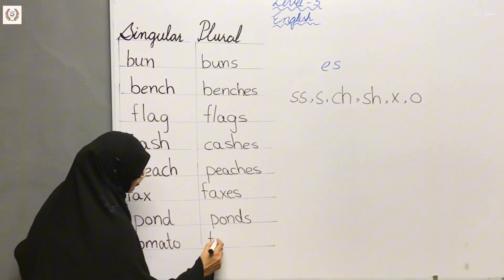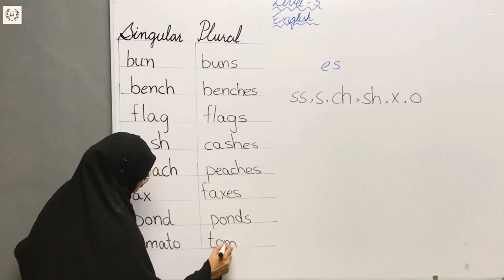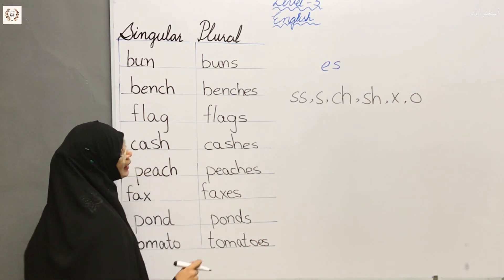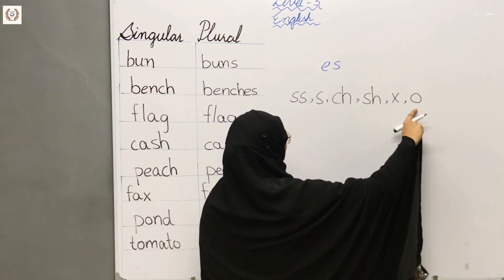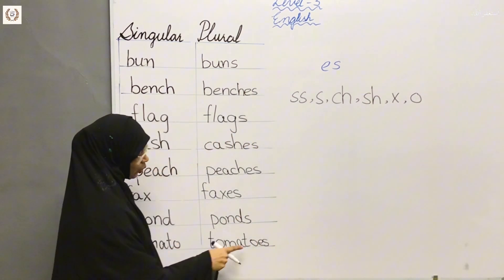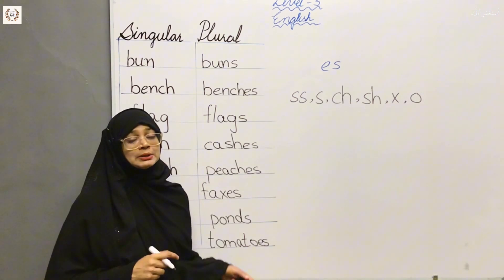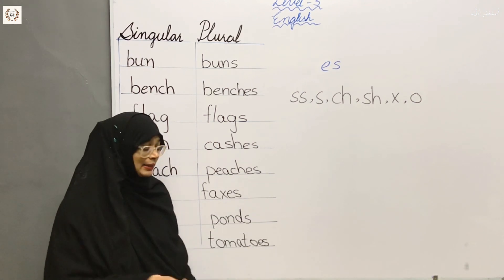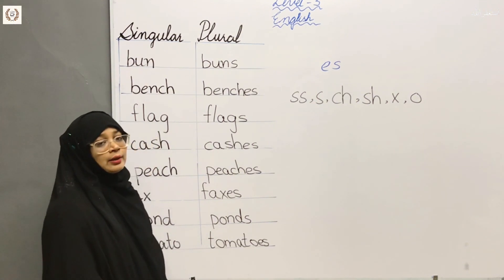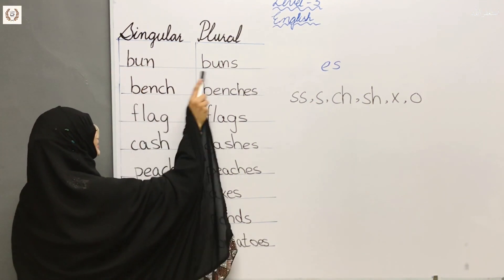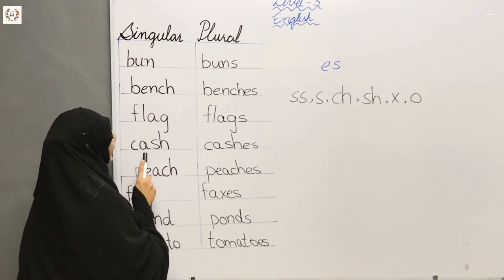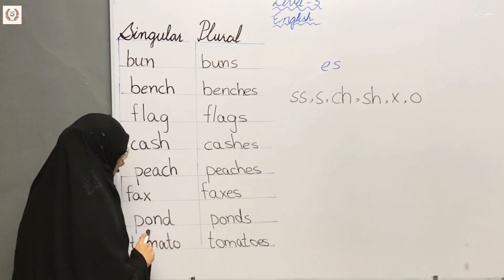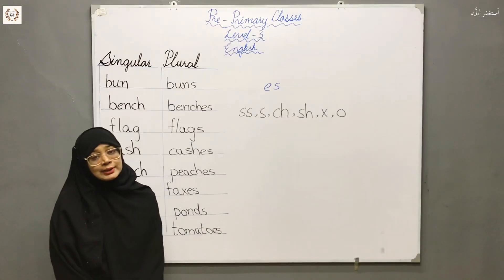Plants — Ponds. Tomatoes. If the spelling ends on O, we add ES. Now let's read: Buns, Benches, Flag — Flags, Cash — Caches, Peach — Peaches, Fox — Foxes, Pond — Ponds, Tomato — Tomatoes.